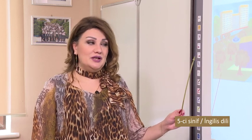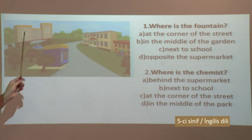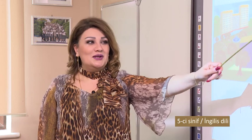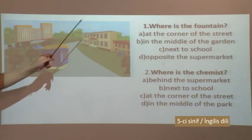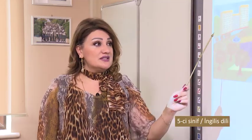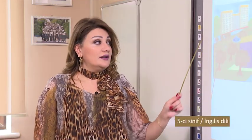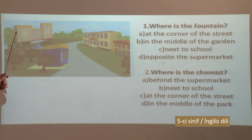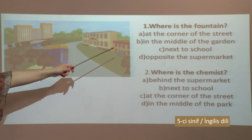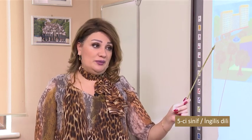Let's discover this picture and answer the questions. Where is the fountain? A - at the corner of the street, B - in the middle of the garden, C - next to school, D - opposite the supermarket. A is incorrect - it's a corner of the street but that's not where the fountain is. B - in the middle of the park or garden - yes, the fountain is in the middle. C - next to school - it's not next to school. D - opposite the supermarket - it is not opposite but behind the supermarket. Therefore the correct variant is B.